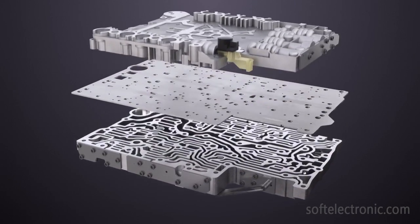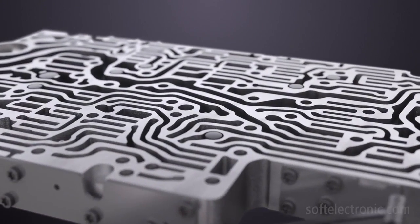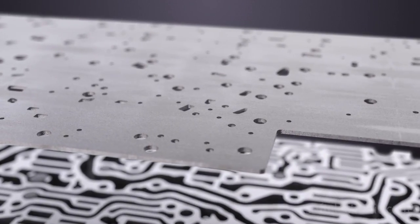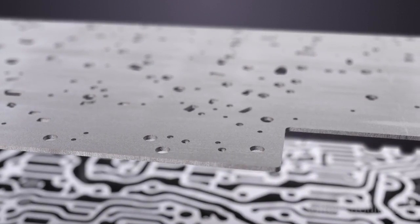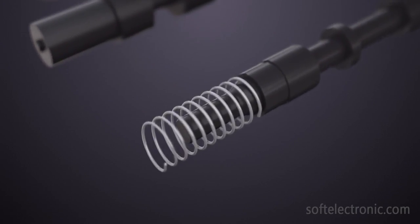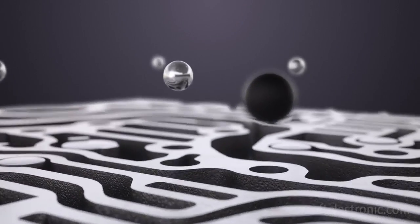It consists of the following components: plates with fluid paths and valve seats, gasket plates with gaps on specific places, hydraulic valves, springs, and plastic and metal balls.